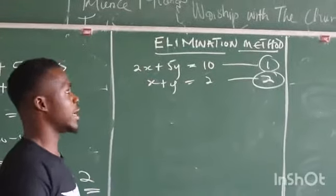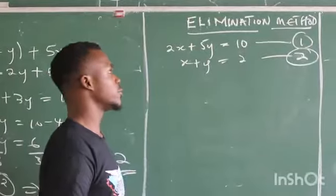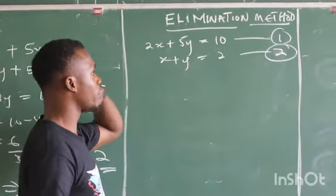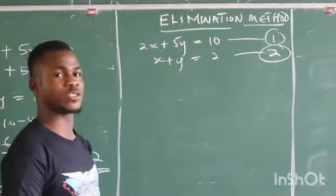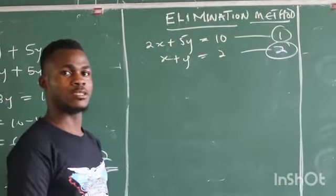What we are going to do for the elimination method? The word elimination means removing or canceling out. We are going to look for a way to cancel out one of these variables so that it will be simplified and we can get the other variable.